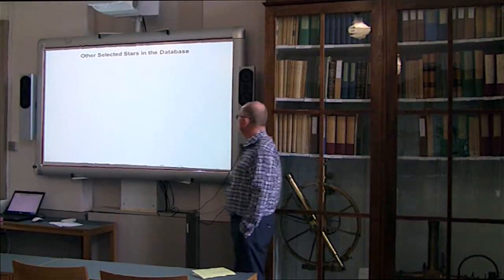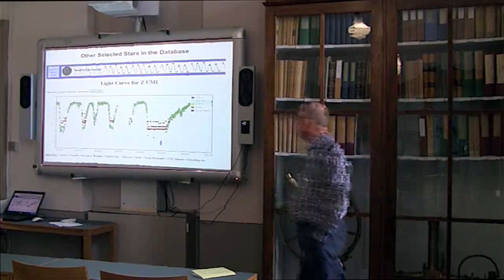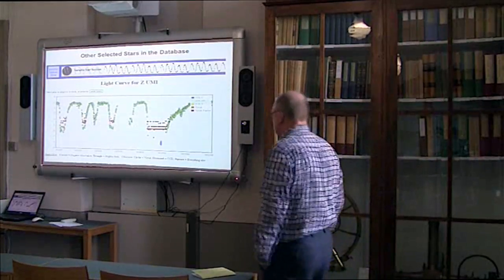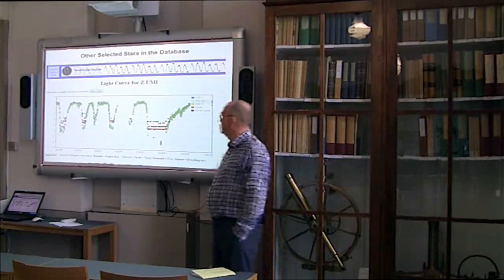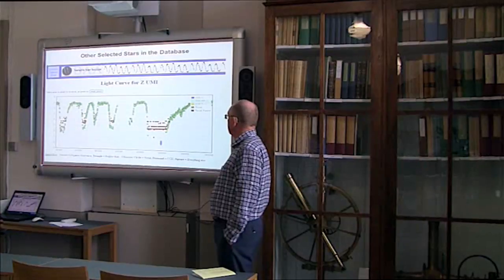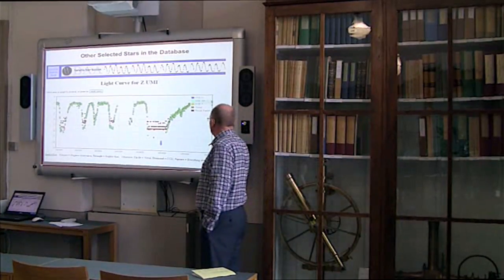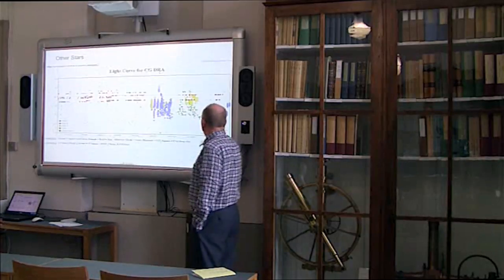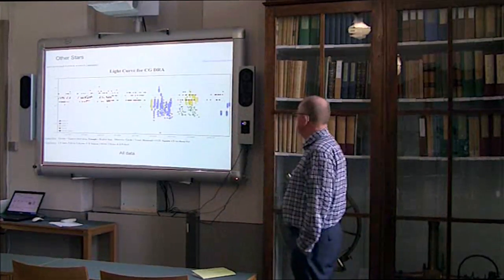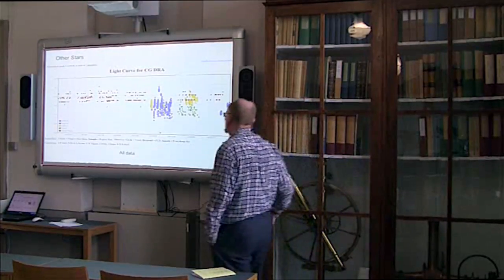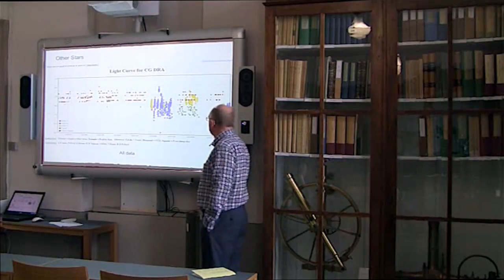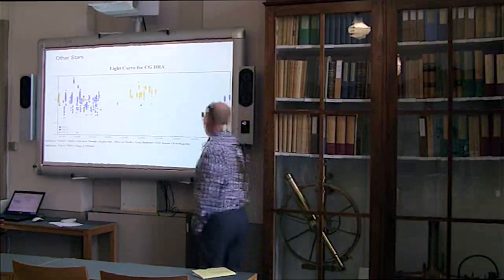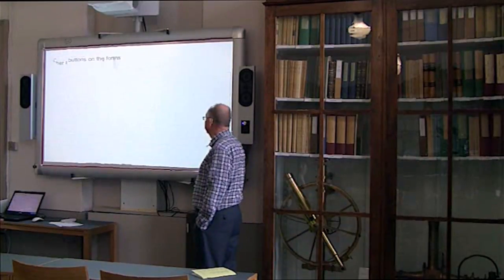Other selected stars from the database. This is a light curve for Zeta Ursae Minoris. You can see the crosses where the negative observations. The light curve of CG Cygni. All the data including CCD observations.